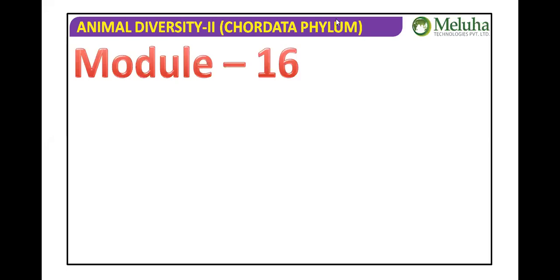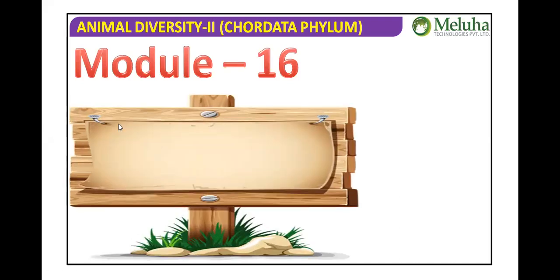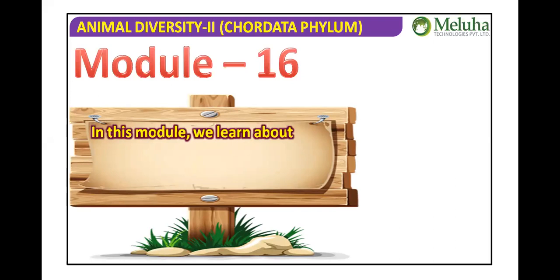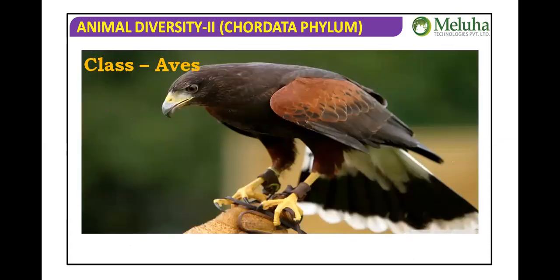Let's start with Class Aves. As a reminder, we are in Phylum Chordata, which has three subphyla: Urochordata, Cephalochordata, and Vertebrata. Subphylum Vertebrata includes superclasses Agnatha and Gnathostomata. In Gnathostomata we have fishes, amphibians, reptiles, aves, and mammals. We have completed up to reptiles and are now moving to the general characters of Aves, which we commonly call birds.